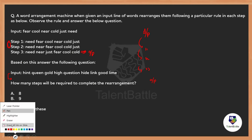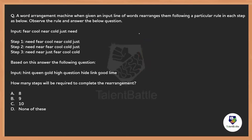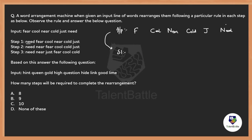First, in order to say that, you need to understand what happened here. The given input is: fear, cool, near, cold, just, need. If you take only the alphabets, what about the N and C? That's why I'm going to write cool and near, cold and need — the other alphabets I can keep as is. Now what happened from input to step 1? The very first word in the input is fear, but suddenly in step 1, need came into picture. You can think that the last word came to the first place, and every word just shifted its place to the next place. So fear came here, cool came here, near came here, cold here, and just here.